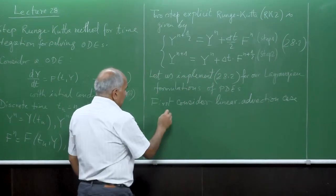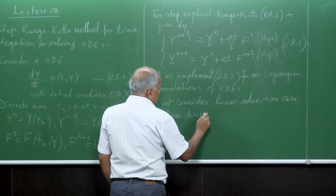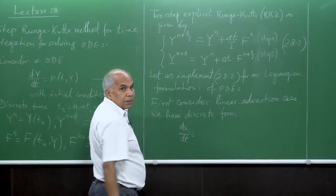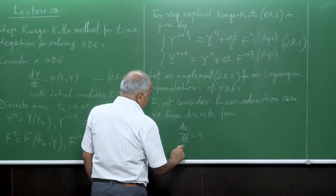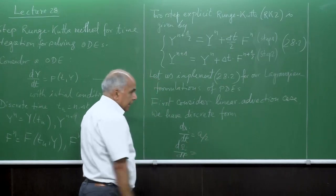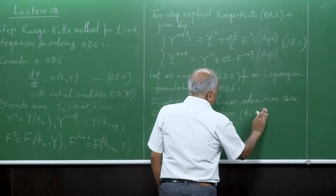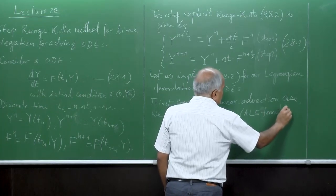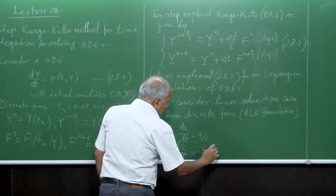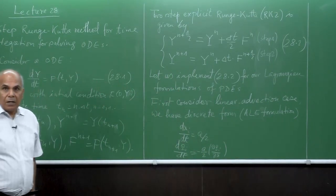In this case, what do we have? We have the discrete form. Let us remember: dx_i/dt = a, and d(rho_i)/dt = -(a/2) * (del rho_i / del x). This was our discrete form of the ALA — Arbitrary Lagrangian Eulerian — formulation, where i runs from 1 to the number of grid points.